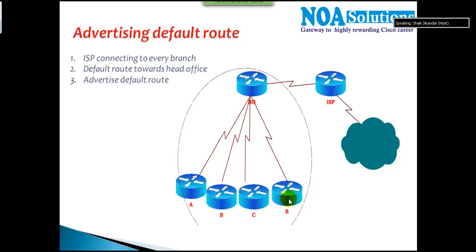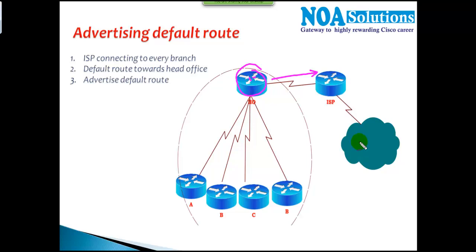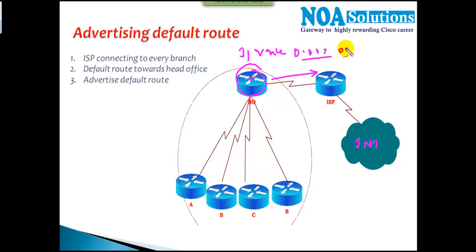In the next couple of videos we'll be discussing how to advertise the default route inside your IGP protocol. From basic CCNA studies, take an example: I have a head office router connecting to my ISP router, from where I'm able to access the internet. To provide internet access, we go to the head office router and type 'ip route 0.0.0.0 0.0.0.0' and the next hop is the ISP address, say 2.2.2.2.